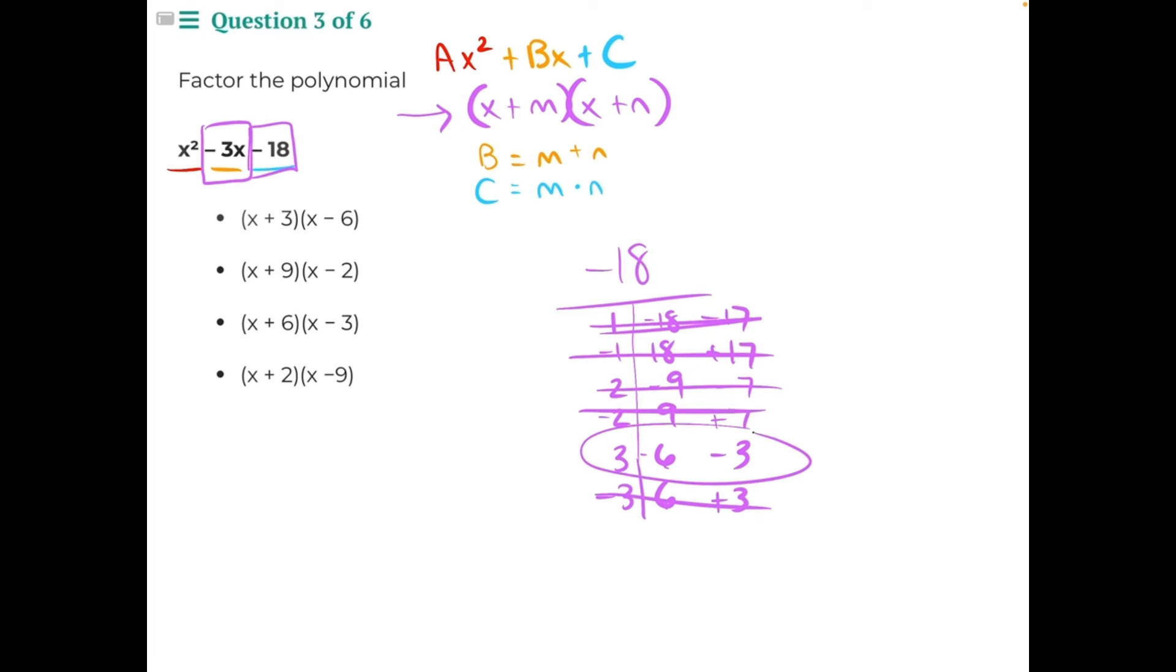This would be negative 3 and positive 3. This is incorrect, but this one, negative 3, matches our b value. So this is the pairing of numbers we will use to create our binomial. So we should have x plus a positive 3 times x minus 6.